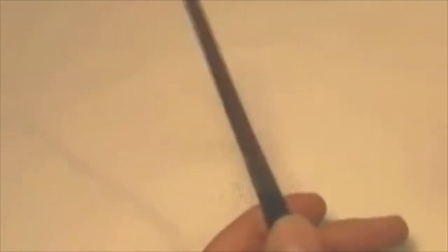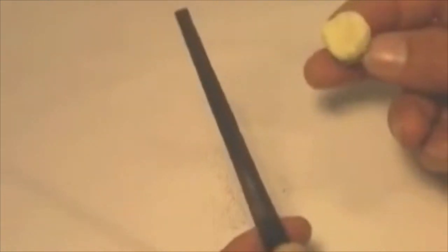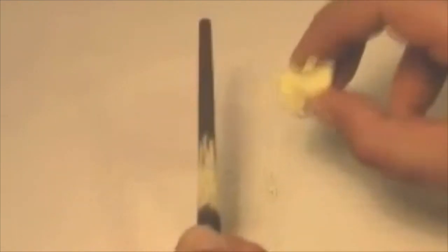Then, using some sidewalk chalk—this is non-wax, dry chalk—just chalk the areas where you can see it's been marked from contacting the instrument. So a little bit on your peg head side and just a slight bit on the tip side.